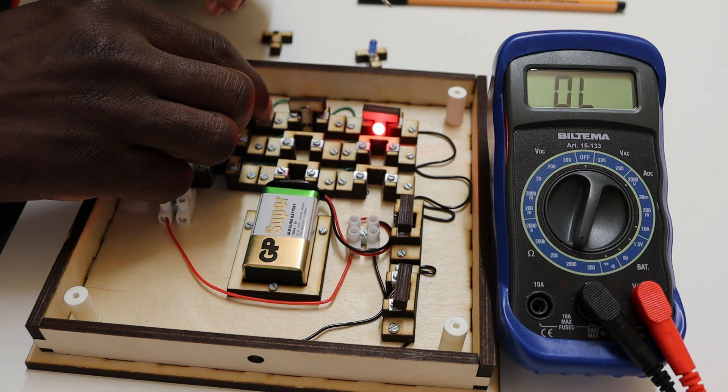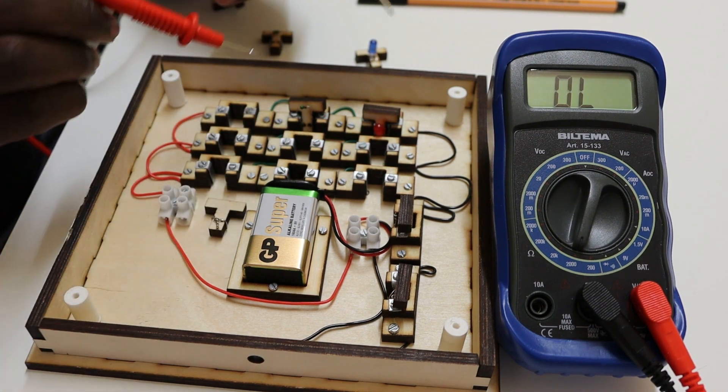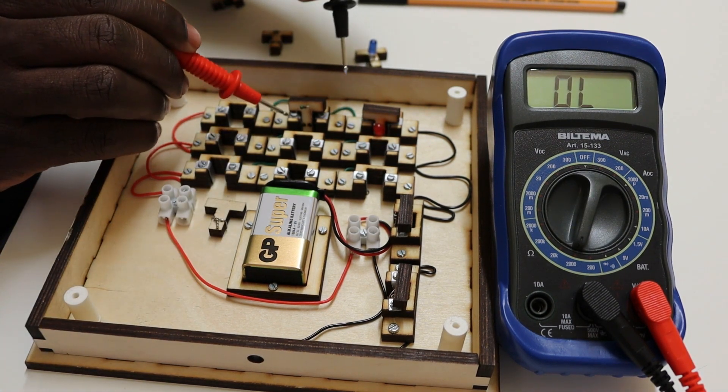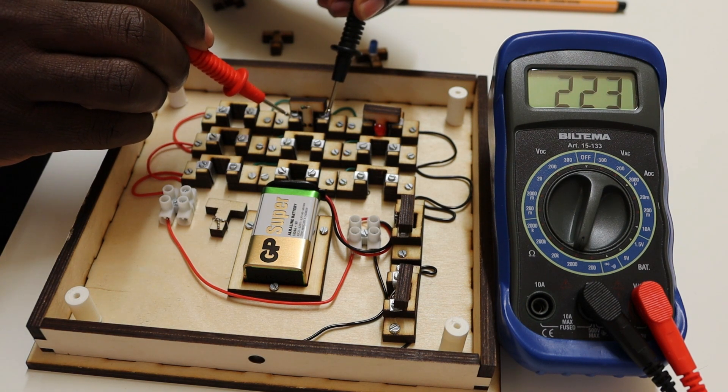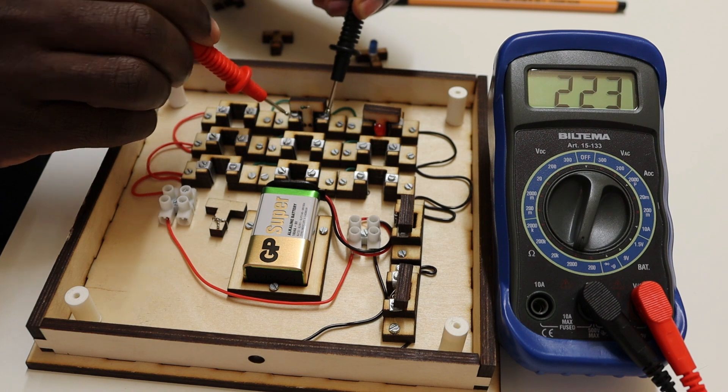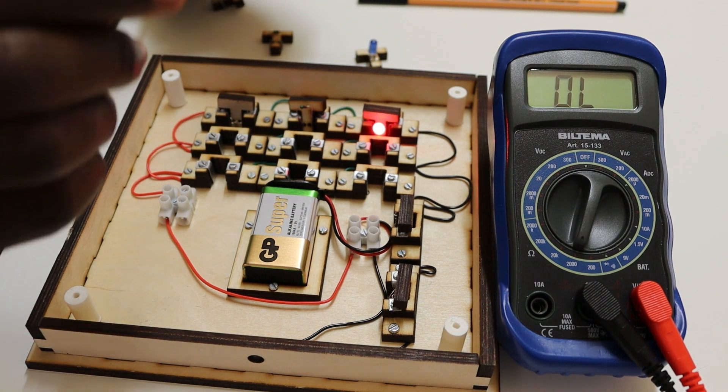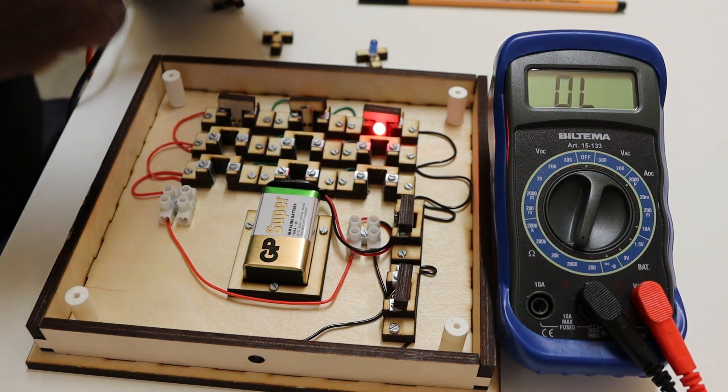Usually in a normal way, if you want to measure the resistance, take this off because you don't need power to measure resistance. As you can see, I have 224, 223 ohms.